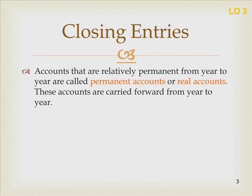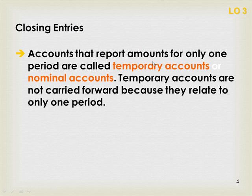Liability accounts are permanent accounts, and the capital account is a permanent account. But revenues, expenses, income summary, and drawing are all considered to be temporary accounts and they close. Accounts that report amounts for only one period are called temporary accounts or nominal accounts. Temporary accounts are not carried forward because they relate to only one period — revenues, expenses, income summary, and drawing only represent one period, not multiple periods.